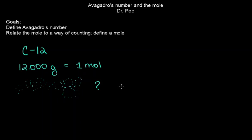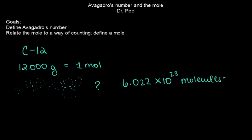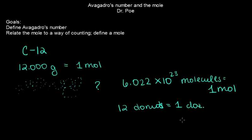So how many atoms would actually be in one mole? Avogadro figured that out as well — it's 6.022 times 10 to the 23rd. That's how many molecules or atoms are in one mole. So just like 12 donuts equals one dozen, 6.022 times 10 to the 23rd molecules is one mole.